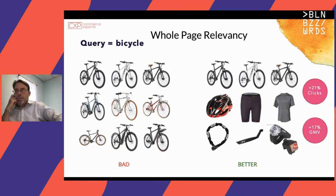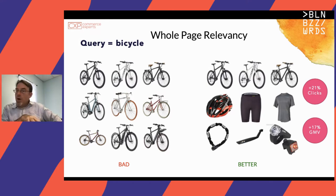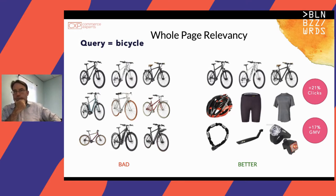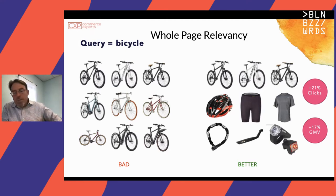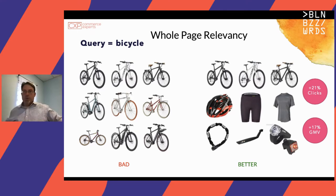I think of this as whole page relevancy — when you start looking at the relationships between those individual results and how they contribute to the whole. Bad results on the left, better results on the right. So we have an intuitive sense based on research that diversity in our search results is a good thing. However, this begs the question: how do we put a number on diversity of our own search results? We all know that old saw — you can't improve what you can't measure.